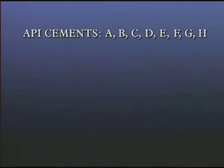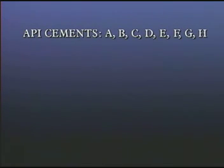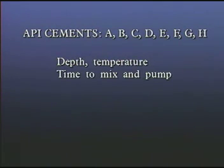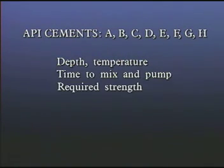The API has classified cements according to these properties, and choosing the proper class of cement for a given section of casing will depend upon the depth and therefore the temperature at which setting will occur, the time allotted to mix and pump the slurry, and the strength required to withstand formation pressures and support the casing.